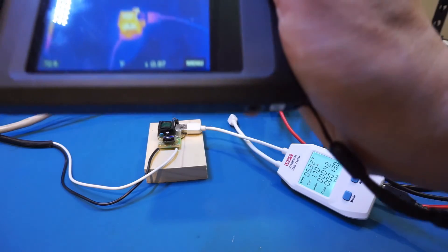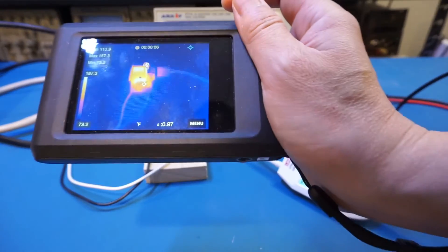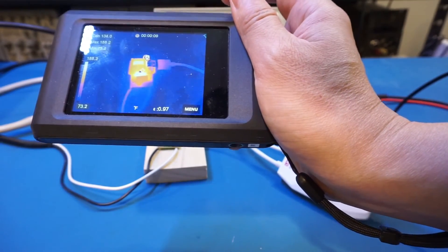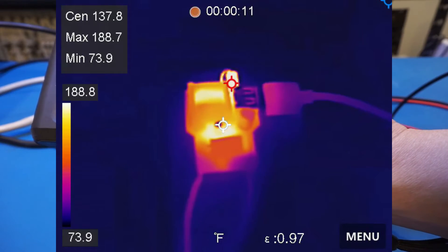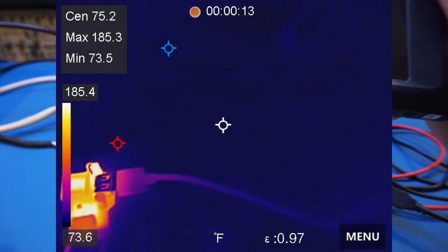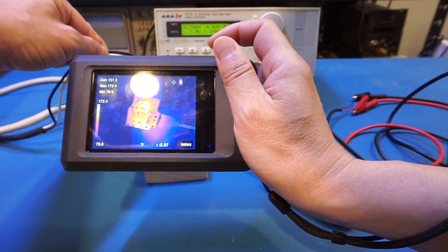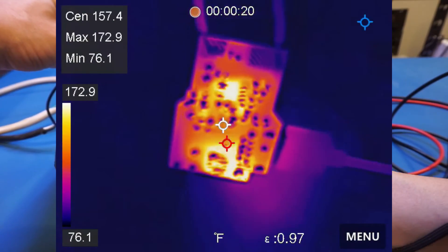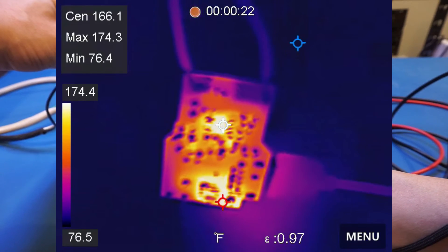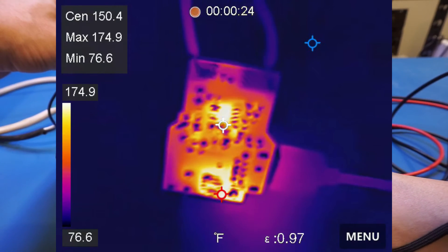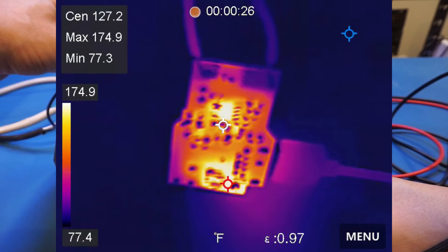And you can see that power adapter is already very toasty. Right now, the maximum temperature is 188 degrees. That's just on this side. Let's carefully flip it over and see what is on the bottom side. Wow. As you can see, everything is just so hot. It is 174 degrees down here.